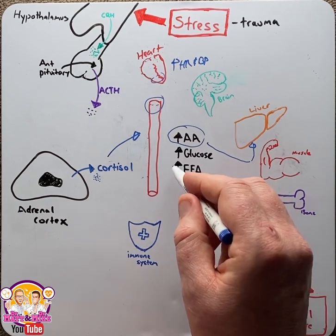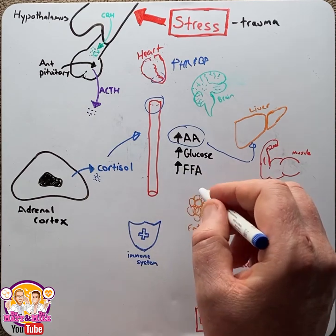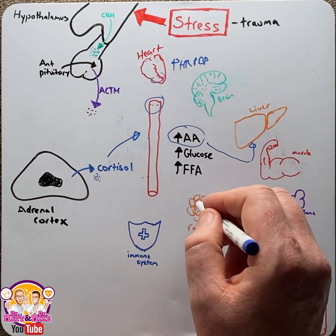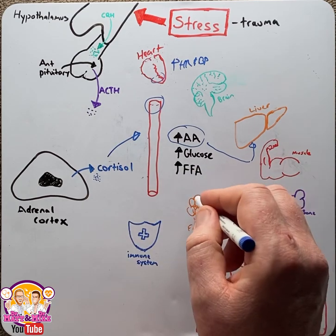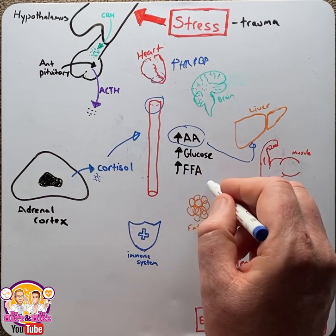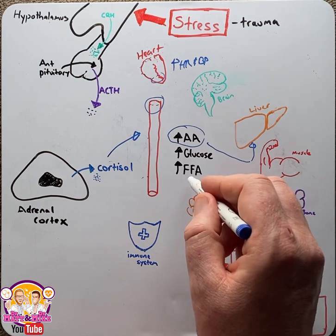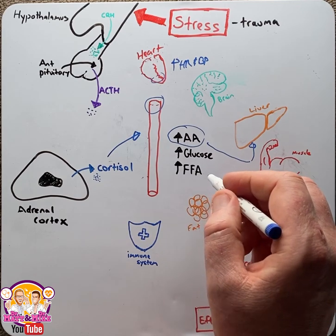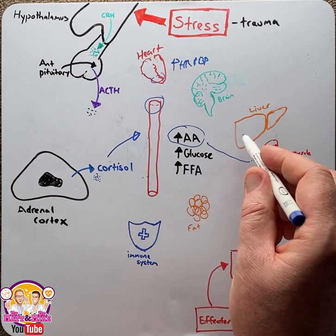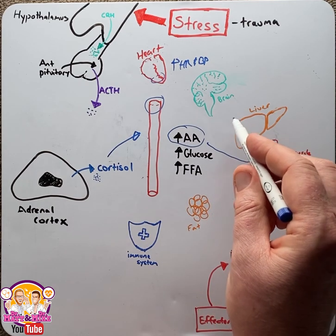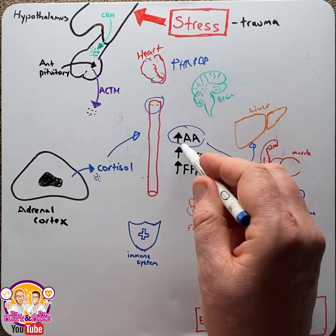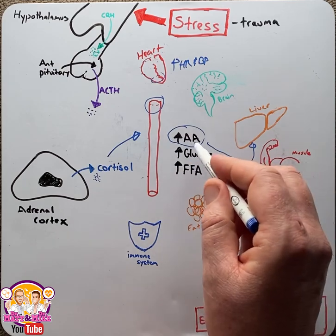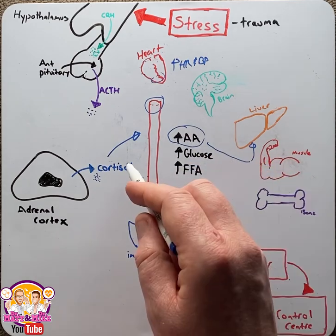Cortisol will increase free fatty acids by mobilizing fat from adipocytes, increasing the free fatty acids in the blood. Most go into the liver to again be made back into glucose, increasing glucose levels.